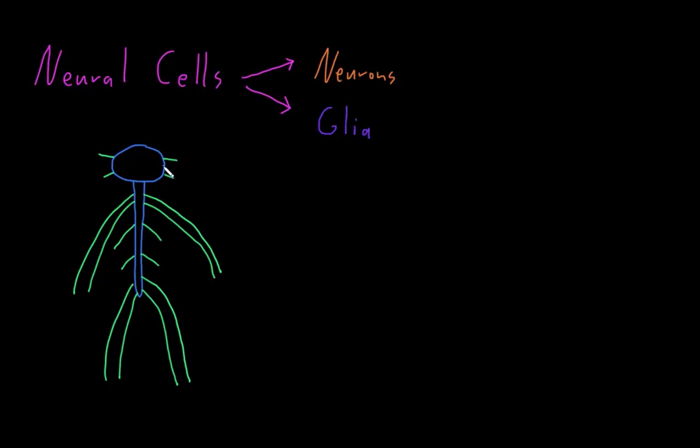Neurons are found both in the central nervous system, the brain and the spinal cord, and the peripheral nervous system in the nerves. But the different types of glial cells are found only in one or the other.